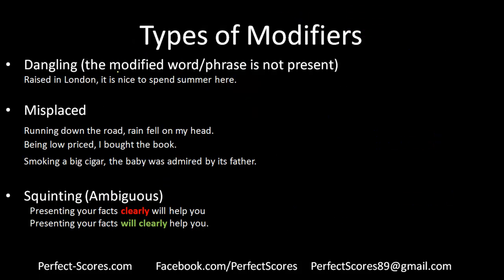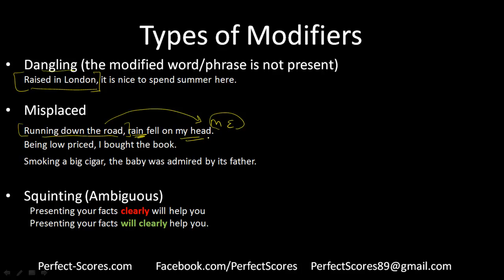Types of modifier errors: Dangling modifiers are when the modified word or phrase is not present in the sentence at all. For example, 'raised in London, it is nice to spend summer here' — who is raised in London? We don't know; it's not mentioned. Misplaced modifiers are easier to spot: 'running down the road, rain fell on my head' — running down the road should apply to me, not the rain. This can also be a dangling modifier since 'me' doesn't appear — neither the rain nor my head can run down the road.